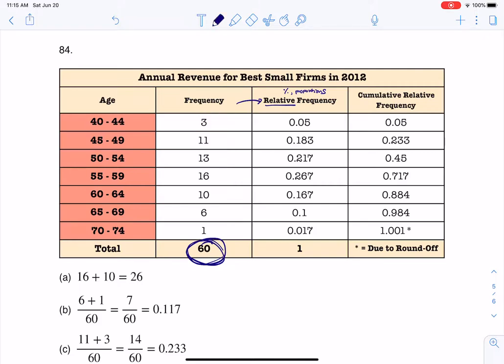For this particular problem, if I want to go from here to here, I'm going to look at 3 divided by 60, and that's the number 0.05. If I want to take these 11 CEOs that are between 45 and 49 years old and turn them into a relative frequency, I'm going to take 11 and divide it by 60, and I get that there's about 18% of these CEOs in this age group. That's how we do all of these: divide this by 60, divide this by 60, so on and so forth.